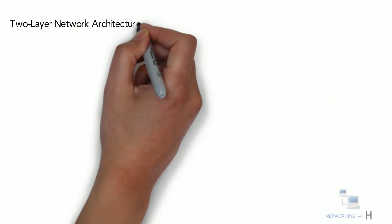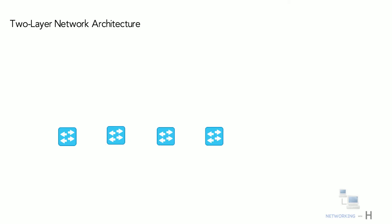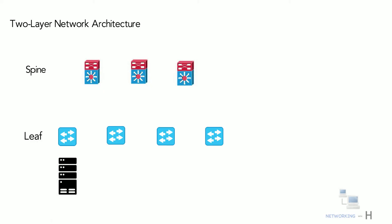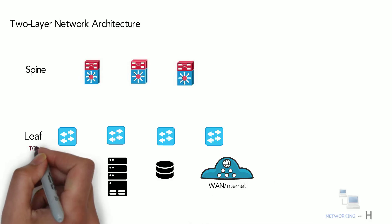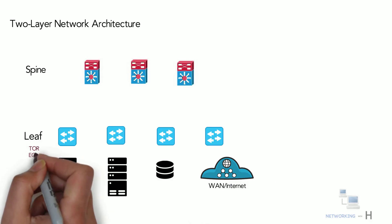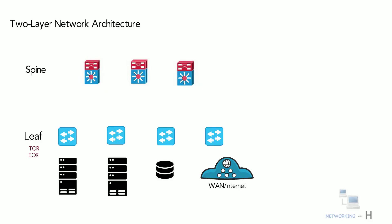Spine-leaf is a two-layer network architecture composed of leaf switches and spine switches. The leaf layer consists of access switches that connect to devices such as servers, storage devices, and WAN or internet devices. These switches are also called TOR or top-of-the-rack switches, or EOR end-of-the-rack switches, in modern data centers.